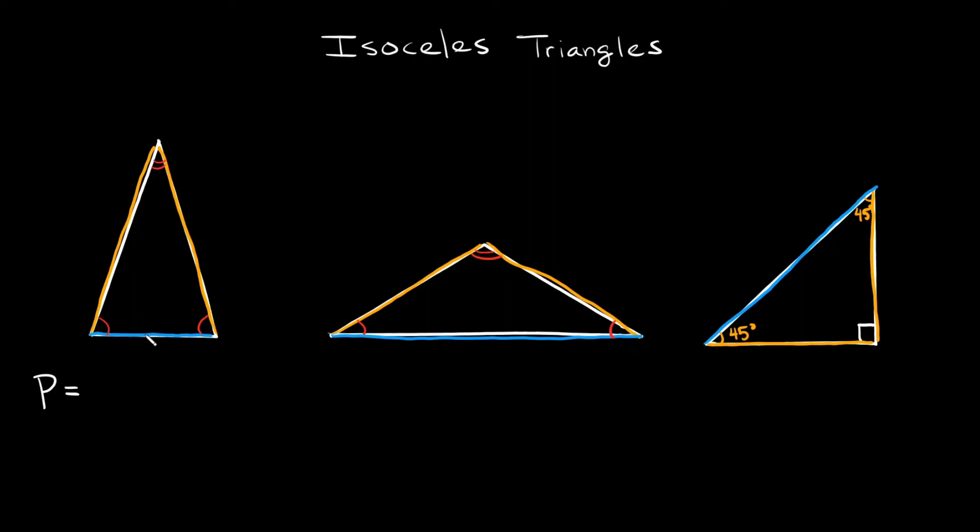this bottom side or the different side, you can just call that the base, and we'll call each of the two sides a side. So if you add up all these sides together you could write it as the perimeter equals the base plus the side plus the side, or simplifying it, the base plus two sides.